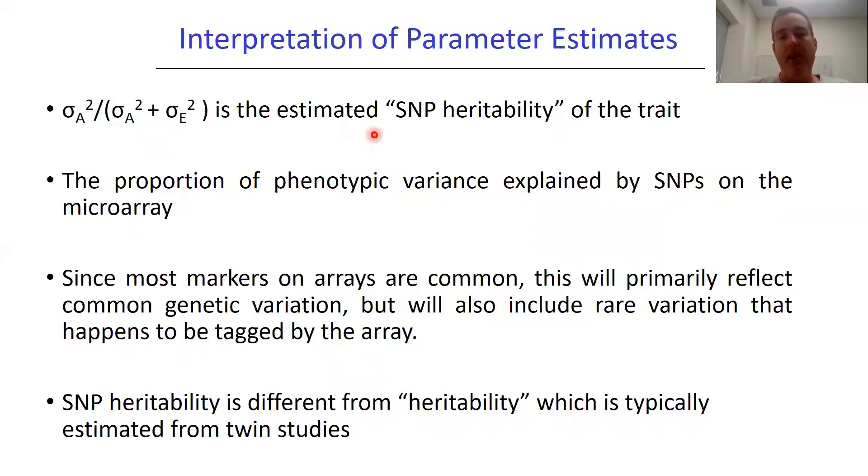Now, since most markers on arrays are common, this will primarily reflect common genetic variation, but it will also include some rare variation that happens to be tagged by the array. So it's not correct to say that SNP heritability is the part of heritability due to common variance. That's absolutely not correct. It's more subtle than that. It's basically all the genetic variation that's tagged by the markers you're putting into that GRM.